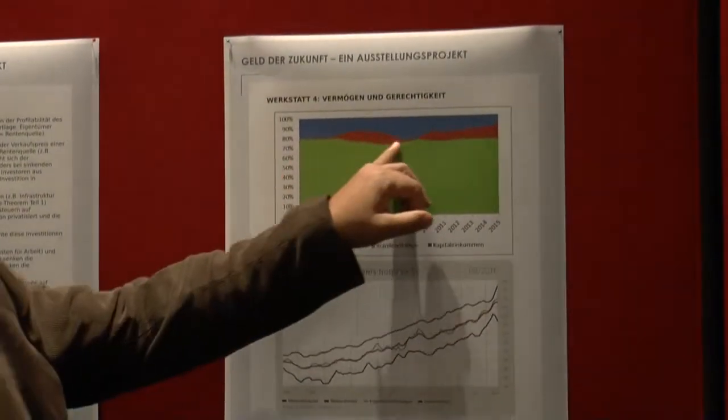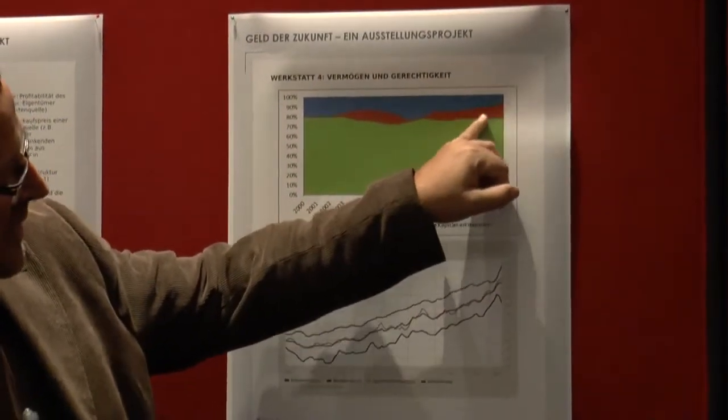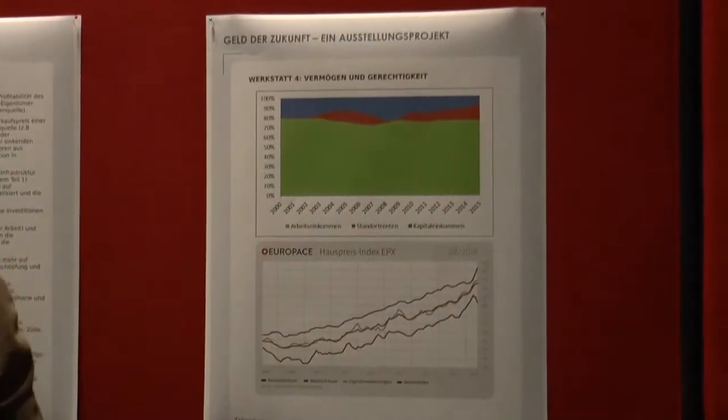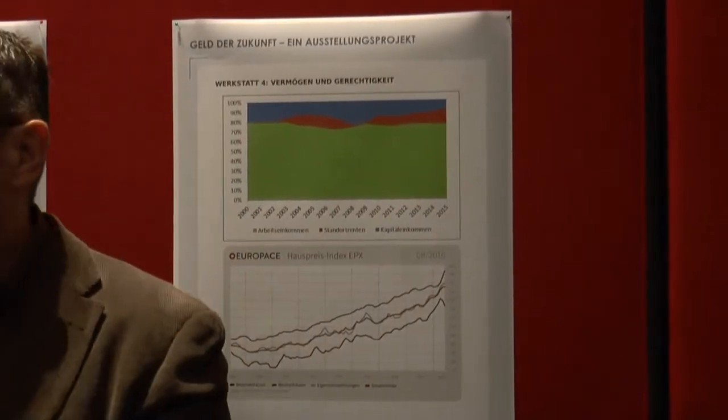Die Bodenrenten sind gestiegen, aber sehr unterschiedlich. In bestimmten Regionen, in der Peripherie, hat sich fast überhaupt nichts getan. Aber hier in den Zentren ist es raketenmäßig hochgestiegen. Das hat auch verschiedene Ursachen. Hier in Frankfurt spielt natürlich auch eine Rolle, dass wir hier die Banken haben, wo sehr gut Verdienende drin sind. Man könnte sich auch die Geschäftsmodelle der Banken angucken, womit die Geld verdienen – das wäre auch sehr interessant.